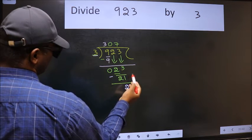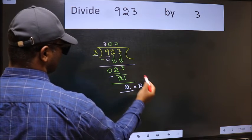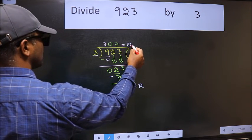No more numbers to bring down. So we stop here. This is our remainder and this is our quotient.